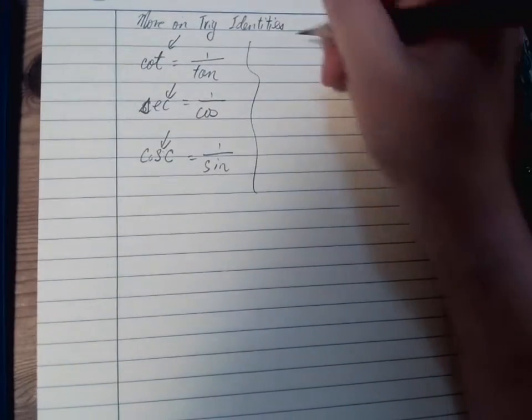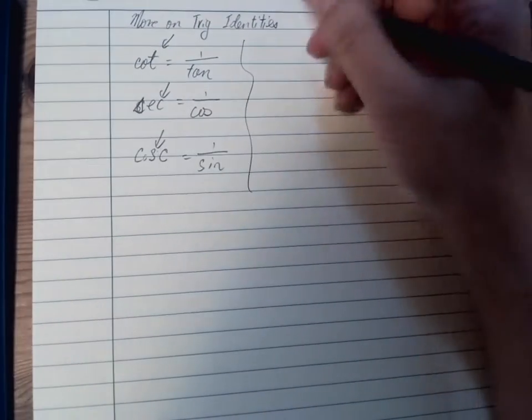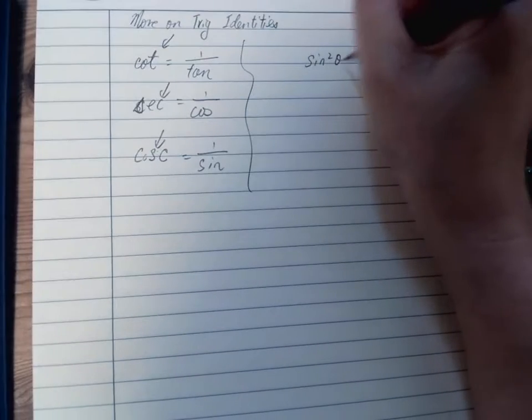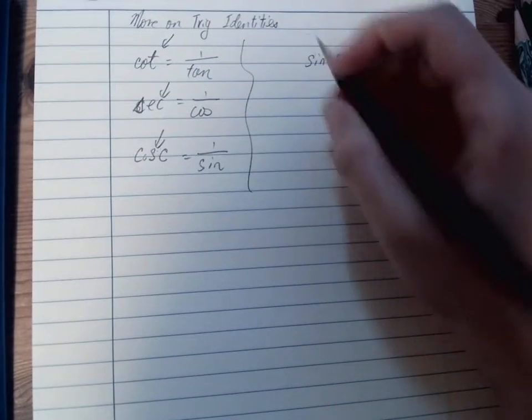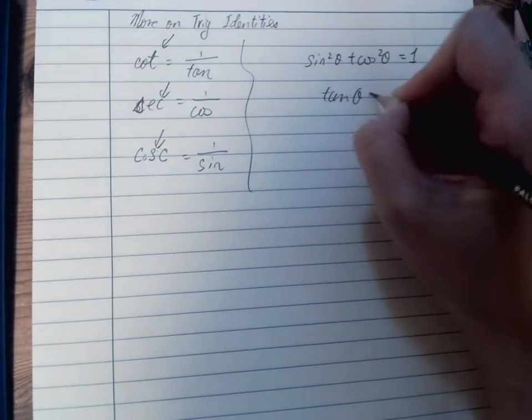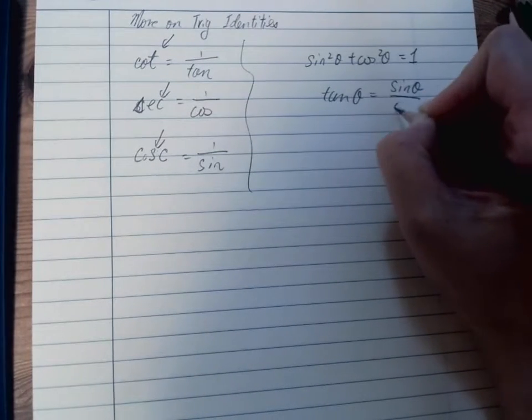So other than that, you will have to remember some of the previous ones: sin squared theta plus cos squared theta equals to 1, tan theta equals to sin over cos.